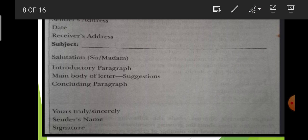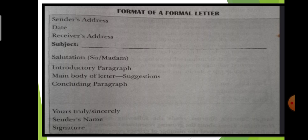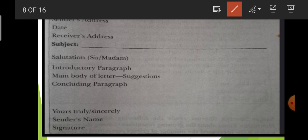After the date, you will write the receiver's address — that means the address of the person to whom you are writing. The sender's address should be finished in two lines and the receiver's address also in one or two lines. After that, you will write the subject of the letter — for what purpose you are writing this letter, the topic in one line.